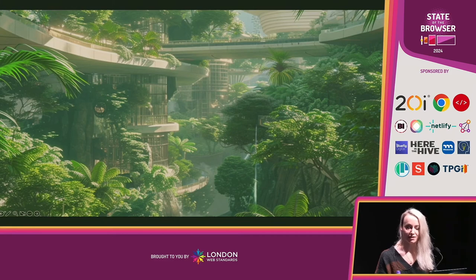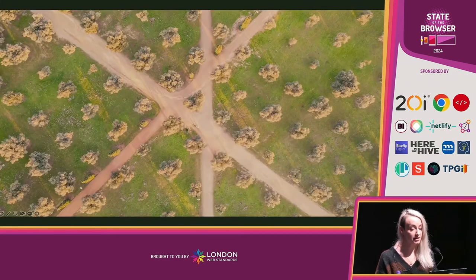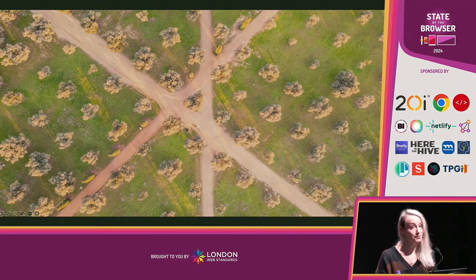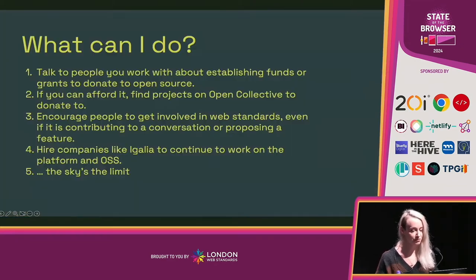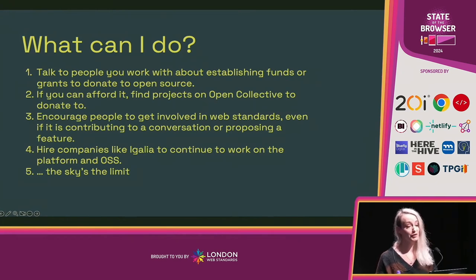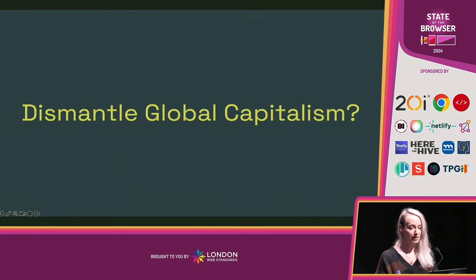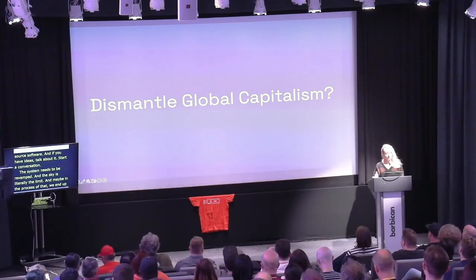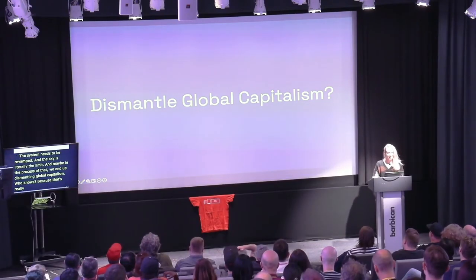Our digital infrastructure should be solid and secure so that the future of the web can flourish and thrive. It's a huge undertaking with many possible paths, and this isn't going to be fixed today, but we need to start somewhere. So let's keep this conversation going beyond this room. What can you do today? We need more people outside of the big browser companies to push the web forward. Shameless plug — hire companies like Igalia to work on the web platform and open source software. And if you have ideas, talk about it, start a conversation. The system needs to be revamped and the sky is literally the limit. And maybe in the process of that, we end up dismantling global capitalism — who knows? Because that's really the root cause here. Think big.